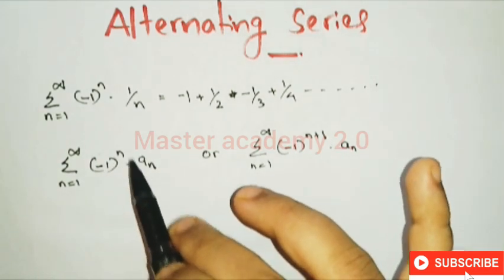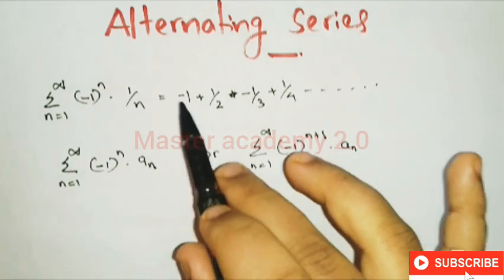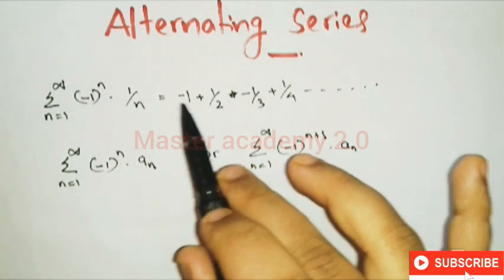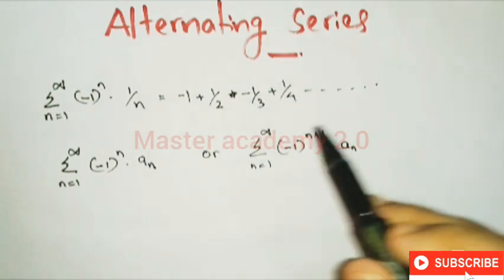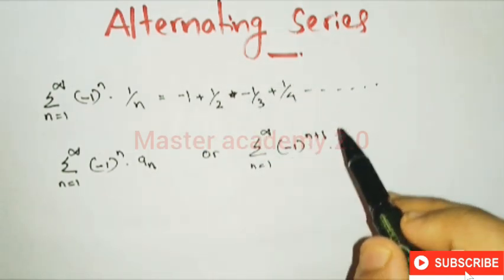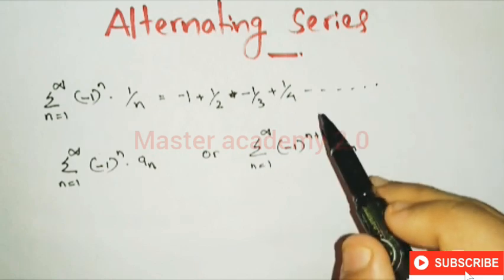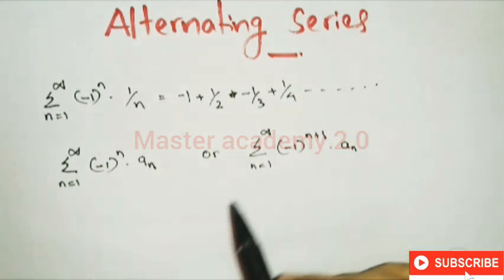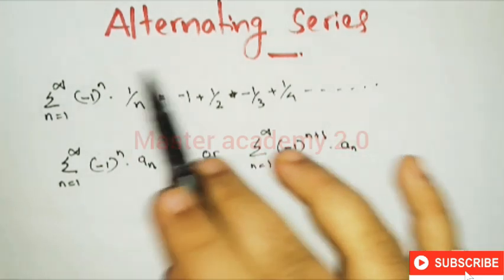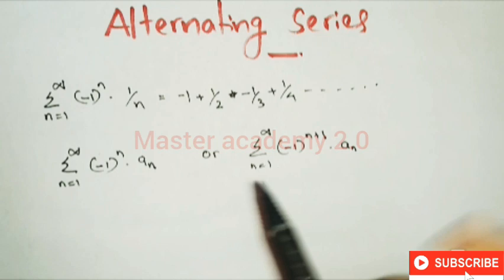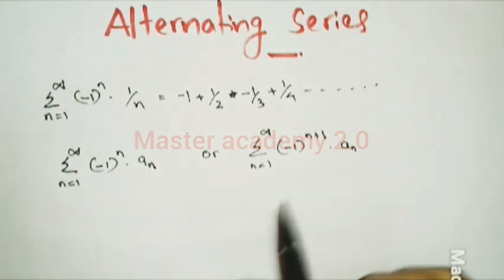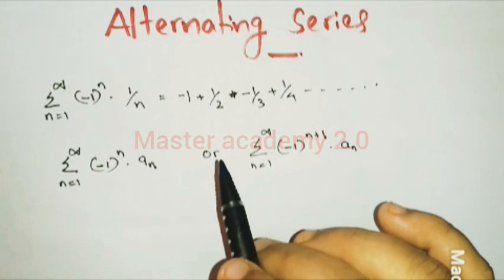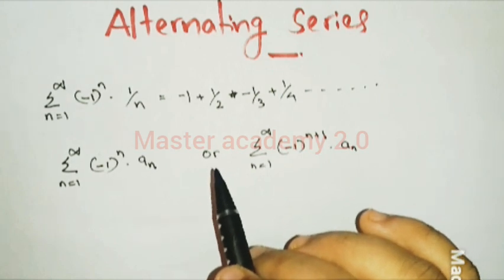Minus 1 raised to n gives: negative, positive, negative... Minus 1 raised to n plus 1 gives: positive, negative, positive... This is the alternating series. Now we have an alternating series — convergent or divergent.